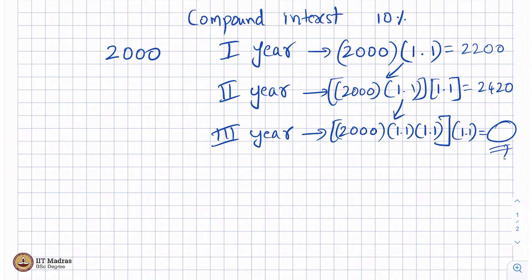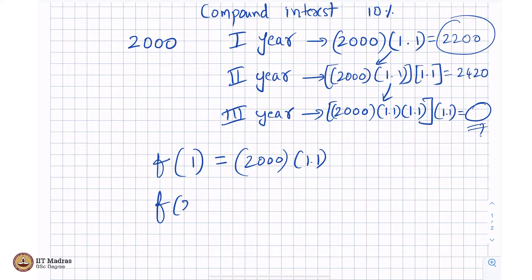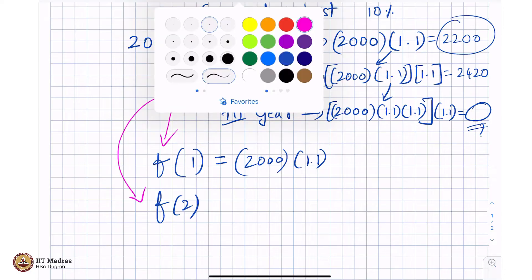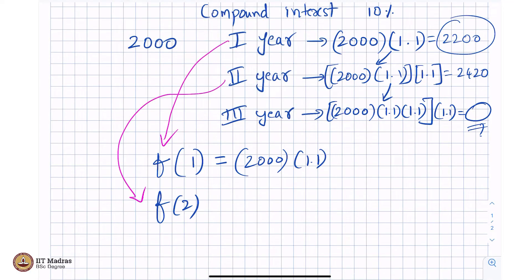I would like to see that here you have a function f. At the end of first year it gives you 2000 into 1.1. At the end of second year, let me call that f of 2. Instead of 1, I will say f(1), instead of 2, I will say f(2) and so on.